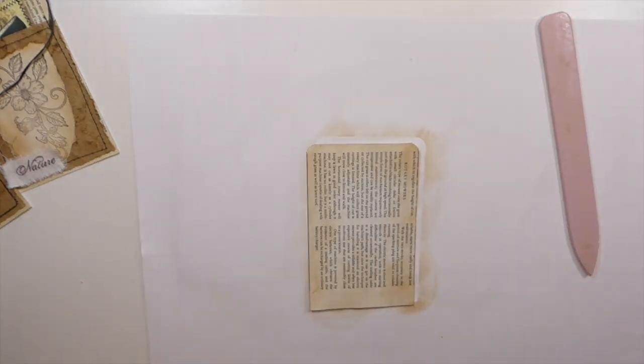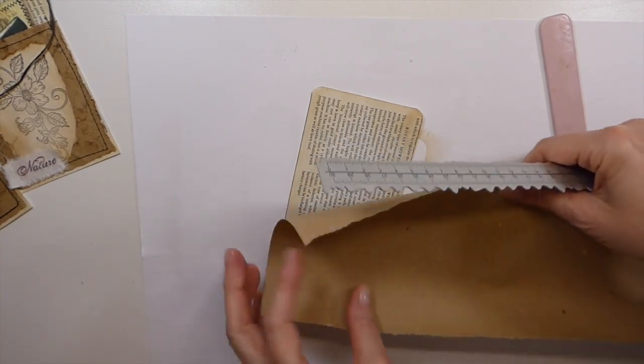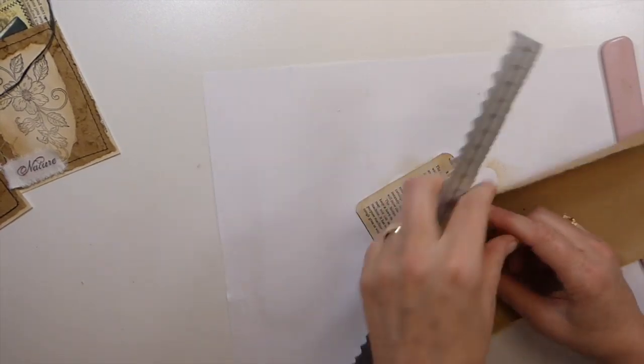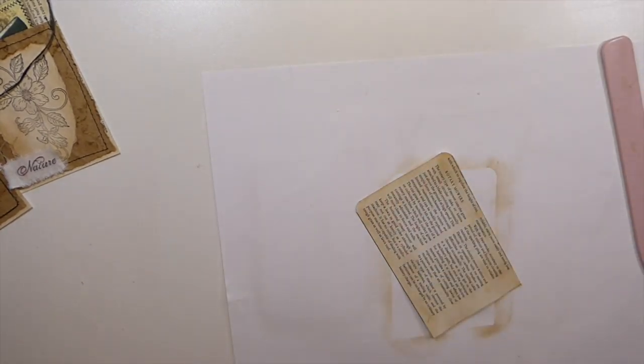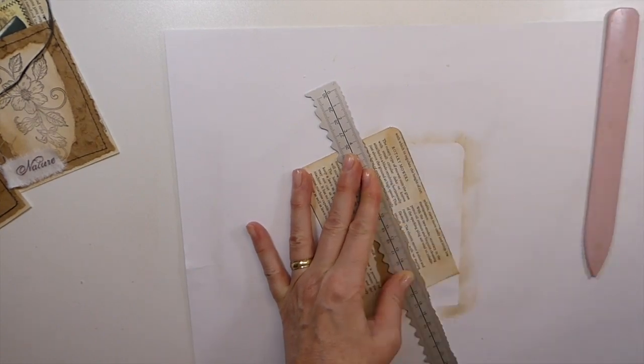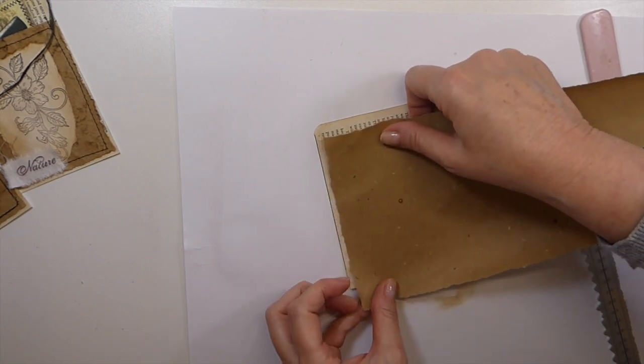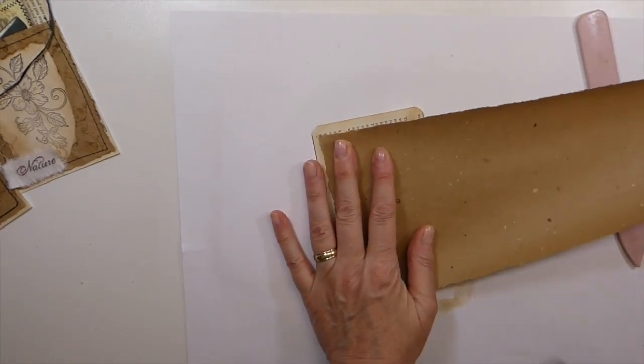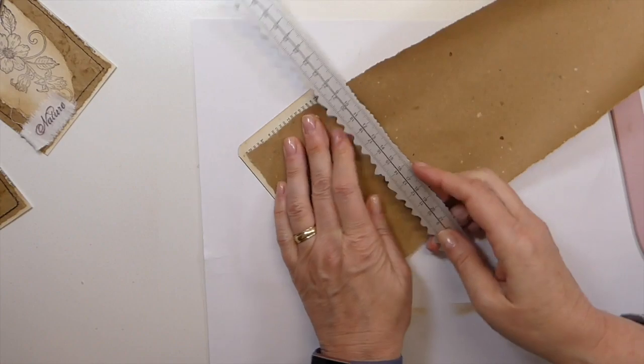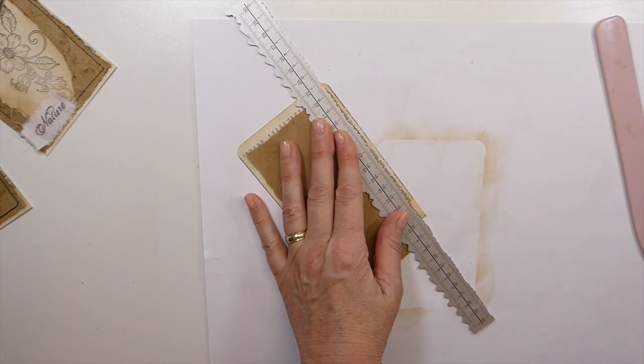Okay, now the next thing I did was take my shipping paper and just decide how wide I'm going to want it. I want some of the print to show on the sides, so I'm going to bring it in probably about an eighth of an inch on each side. You don't have to be too exact on this.